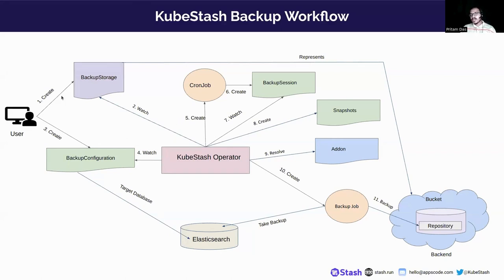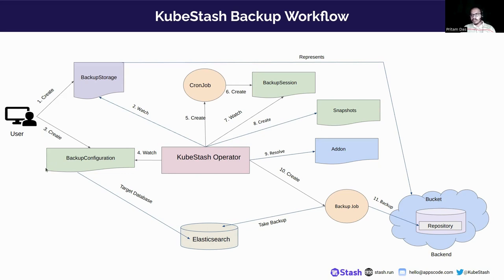If you are taking a backup, the user has to create a BackupStorage first. This will contain necessary information about the backend where we will be saving our snapshots. Then the user has to create a BackupConfiguration, which will contain information about the DB that will be backed up and a reference to the backup storage. It will contain multiple sessions, and KubeStash operator will create one cron job for each session. In each interval, one backup session will be triggered.